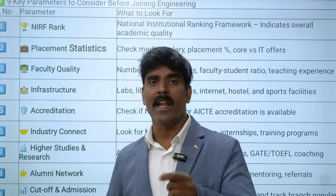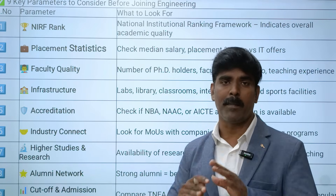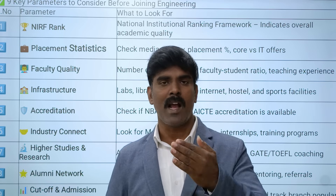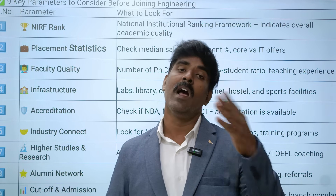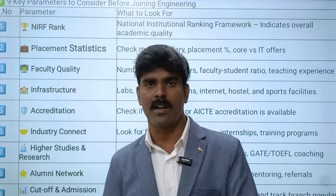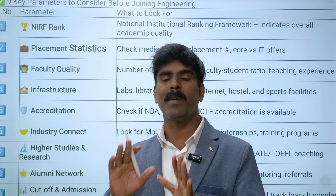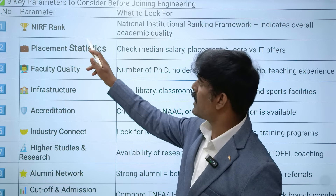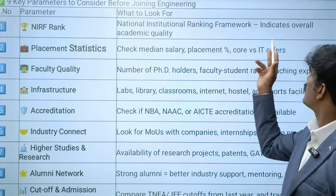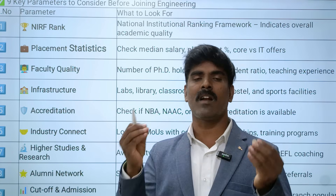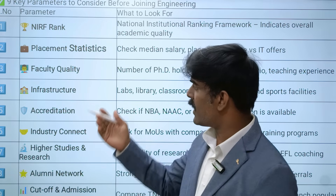Before choosing an engineering college, there are 9 parameters you should definitely check. The first parameter is NIRF ranking - the National Institute Ranking Framework. This indicates the overall academic quality of the college, so you can use NIRF ranking to get the parameters.